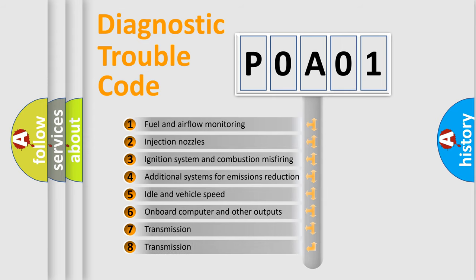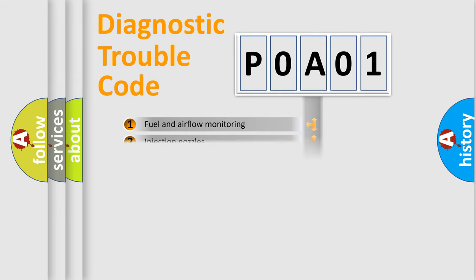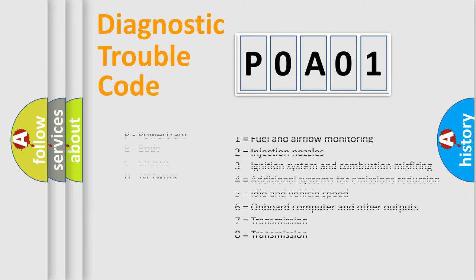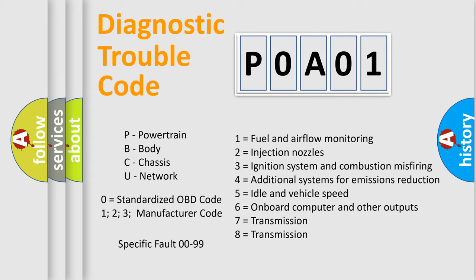The distribution shown is valid only for the standardized DTC code. Only the last two characters define the specific fault of the group. Let's not forget that such a division is valid only if the second character code is expressed by the number zero.